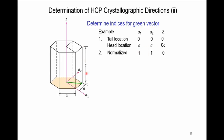So the head location is (A, A) with no change along Z. The next step is to normalize based on unit cell dimensions A and C, which gives us 1, 1, 0. After reduction — since excluding 0 the smallest value is already 1 — we see no change. These values are u prime = 1, v prime = 1, and w prime = 0.